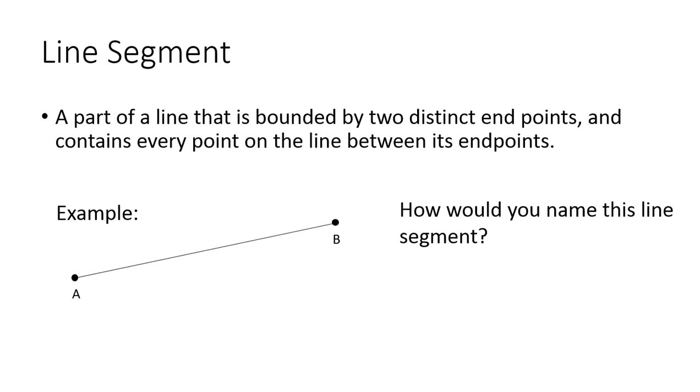Next, we have a line segment. A line segment is a part of a line that is bounded by two distinct endpoints and contains every point on the line between its endpoints. So how would you name this line segment? So the endpoints of this line segment are A and B, so you have to name it by its endpoints. And so you would name it by A, B,